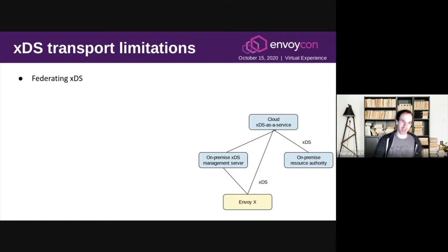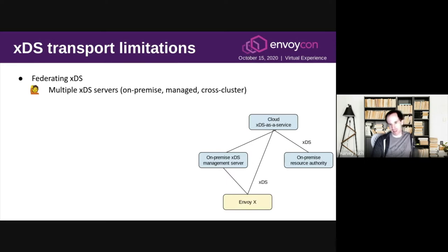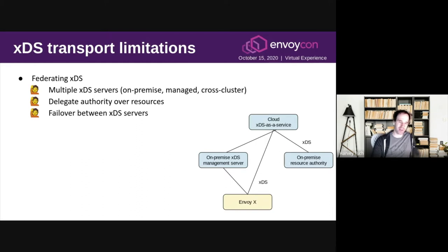The next major next-gen use case is federation, and this is when you want to have multiple control planes managing XDS. Today we have some limited support for having more than one control plane with Envoy, but it's at a very coarse granularity. You can't, for example, delegate a single route configuration to a different server. In this world, we've got multiple XDS servers — they might be in different clusters, different clouds, or on-premise. We want to be able to provide fine-grained delegation of authority over resources and failover between servers as they come and go. Ultimately, what folks want to do as they scale up is disaggregate the control plane into a number of microservices, which this form of federation supports.